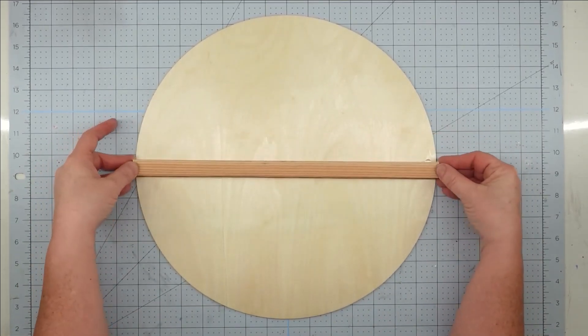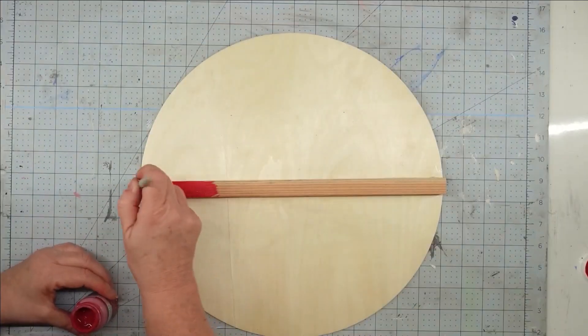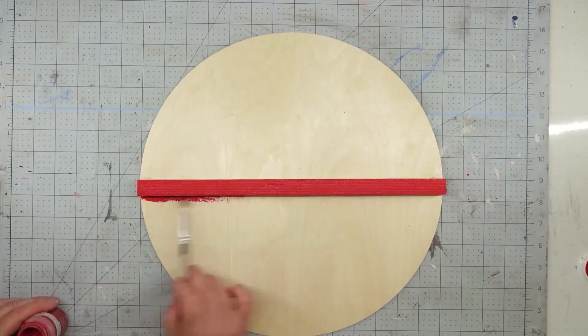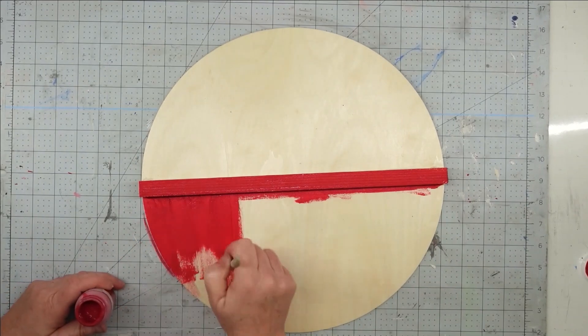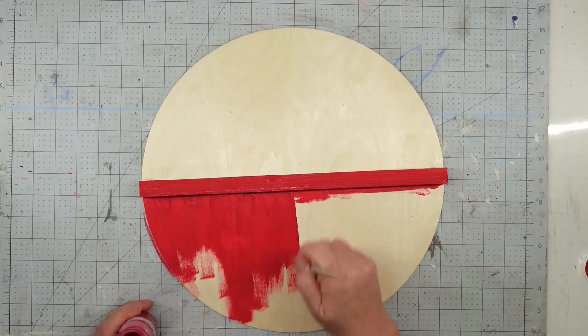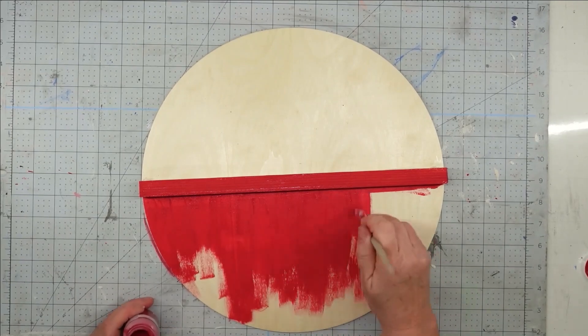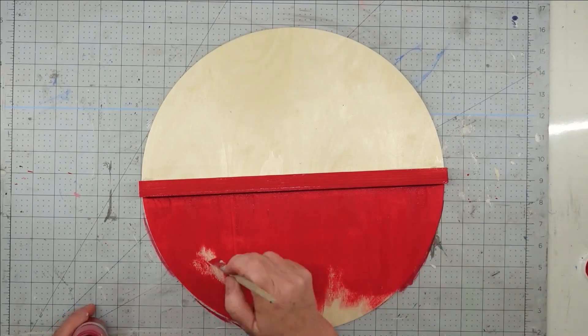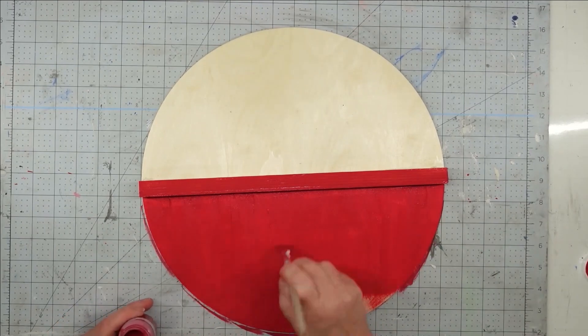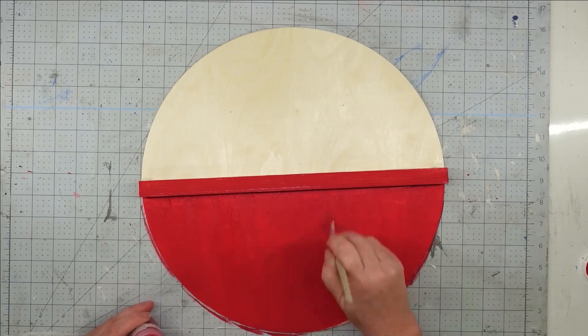Once I get my piece across the center, I'm going to take my Waverly chalk paint in crimson and give it a really good coat and leave it to dry. Now I only did one coat because I want this to look rustic, so I didn't want it to have a good solid look to it. I wanted it to have that kind of beat up rustic look.